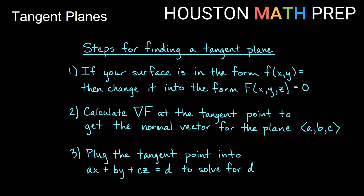To sum up the process of finding a tangent plane: Step 1 — if you have a surface z equals f of x, y, rewrite it as capital F of x, y, z equals zero. If it's already a function of x, y, and z like our ellipsoid, skip to step 2. Step 2 — calculate the gradient of capital F, then plug in the tangent point to get the normal vector. Step 3 — use the normal vector components as coefficients in ax plus by plus cz equals d, then plug in the tangent point again to solve for d. Hopefully this helps you find planes tangent to curves in three-dimensional space. Thanks for watching — we'll see you in the next video.